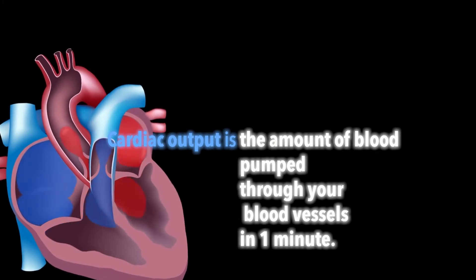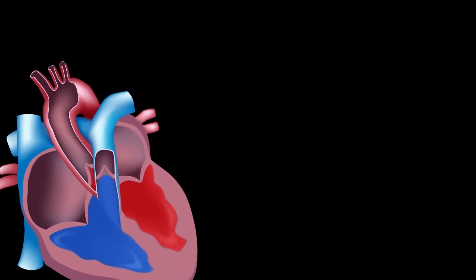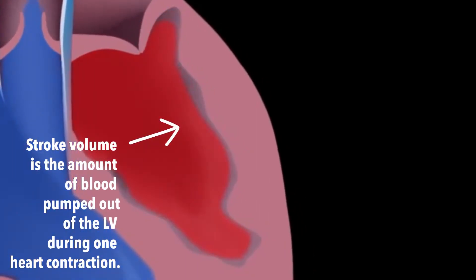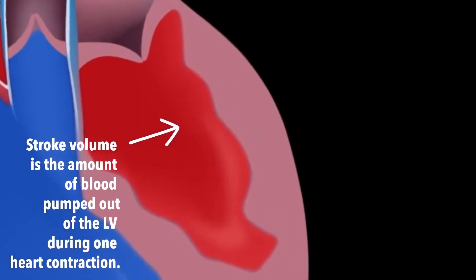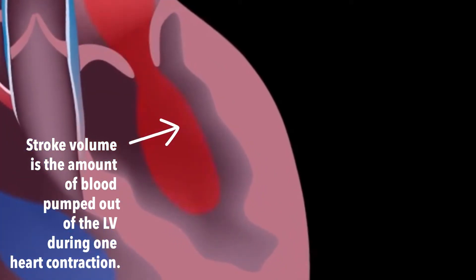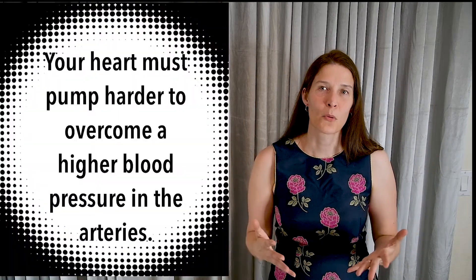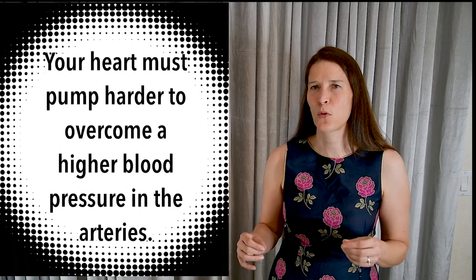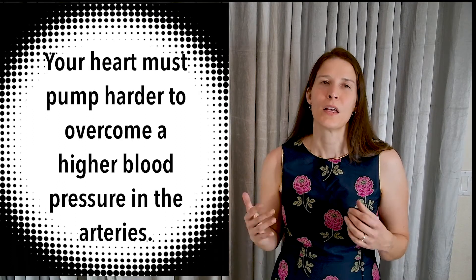So what do these terms mean? Cardiac output is the amount of blood that your heart pumps through your blood vessels in a minute — usually four to five liters per minute for most people. Stroke volume is the amount of blood pumped out of the left ventricle during one heart contraction. And systemic vascular resistance is the amount of force that your heart must overcome to pump blood throughout your body — in other words, the resistance to forward blood flow in your arteries.